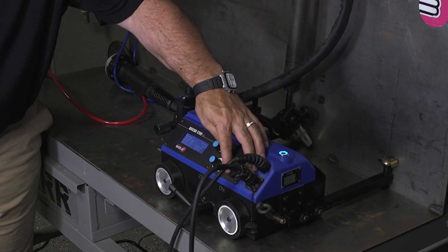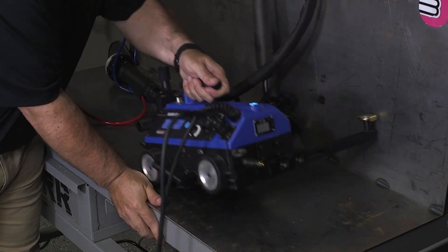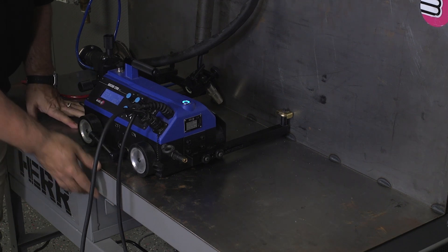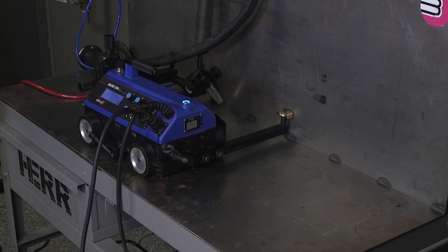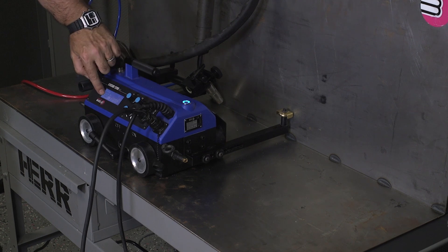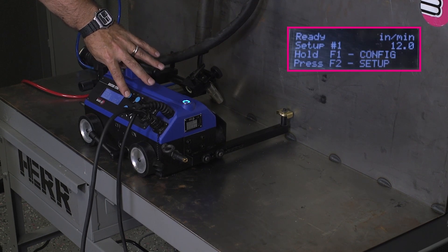Now, what if you wanted to do a three on twelve? You set it up for a three on nine. How easy is it to go back in and make a change to that? Real simple. Hold down F1. We're on setup number one, which is the three by nine. Hold that down.